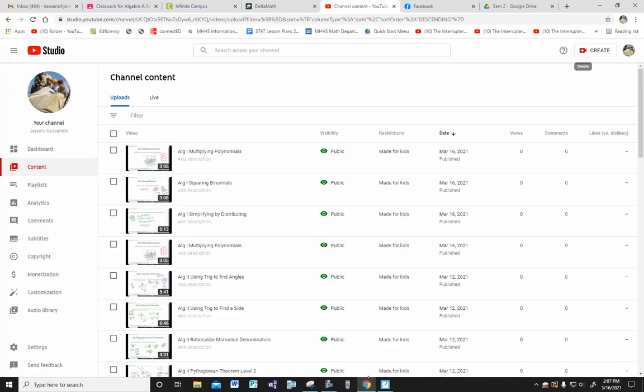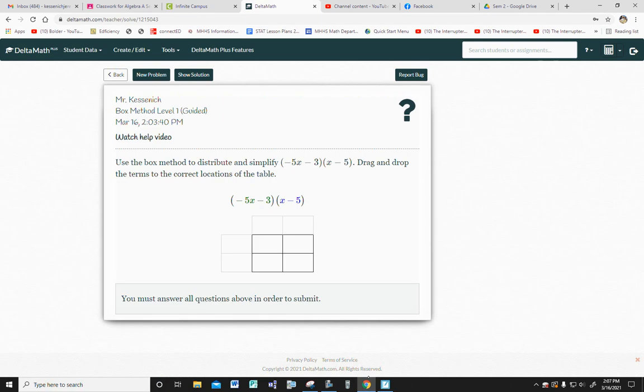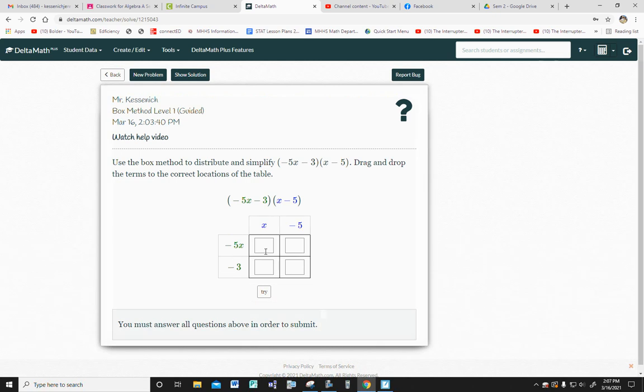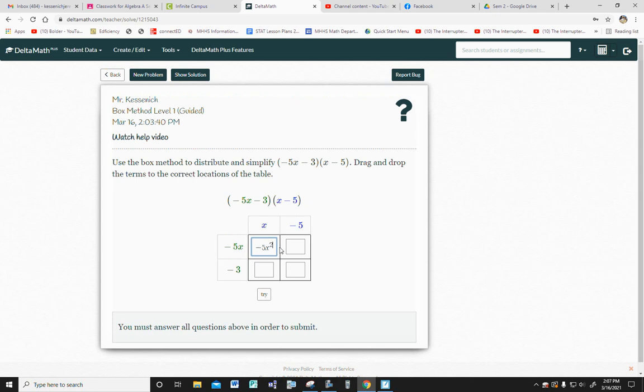Now, to show you that in Delta Math, here it goes. So you drag and drop. This minus 5x will go here. The minus 3 would go here. The x would go in that spot. And the minus 5 goes in this one. Then it fills out the box with spaces for you to type stuff. So that's minus 5x squared. So that's Shift and then 2. And then that would be minus 25x. And this would be minus 3x. And that would be 15. And then you hit try. It's not your final answer, but did I fill the box out right?